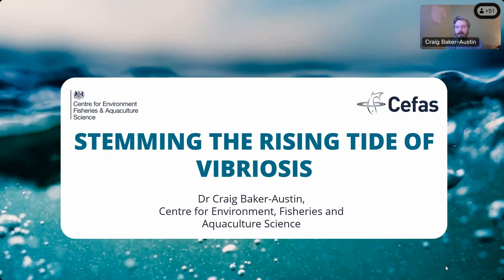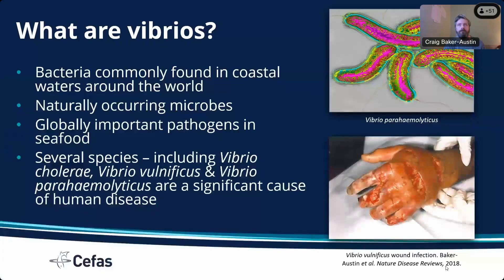These are bacteria where those sorts of methods — genomics, remote sensing, etc. — are going to become more important in the future. So what are Vibrios? These are bacteria commonly found in coastal waters around the world. These are naturally occurring microbes; they're globally important pathogens in seafood and in water. There are about a dozen or more species that can cause infections in humans. The most important — Nick just presented on Vibrio cholerae — but there's also Vibrio vulnificus and Vibrio parahaemolyticus, and those are a significant cause of human disease around the world.